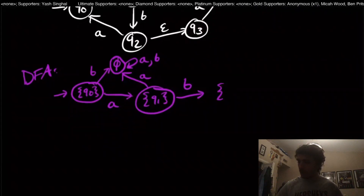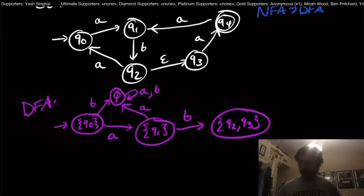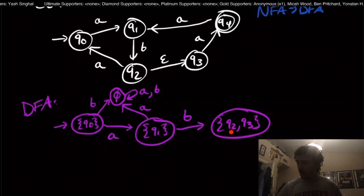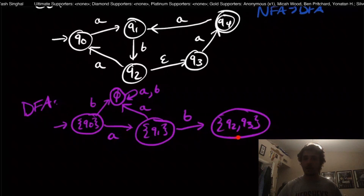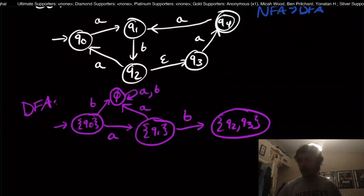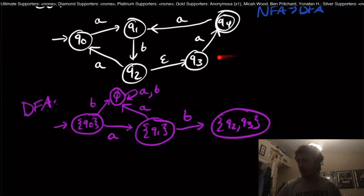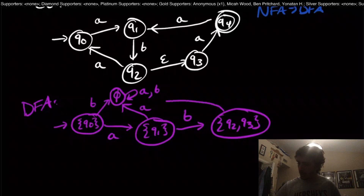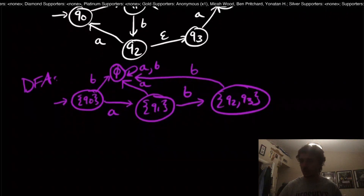Now we need to figure out where the state {q2, q3} goes on input A and B. For B: q2 goes nowhere on B, and q3 goes nowhere on B. So the B transition goes to the dead state — that's called the dead state in the literature.